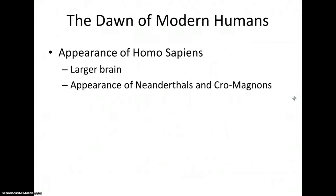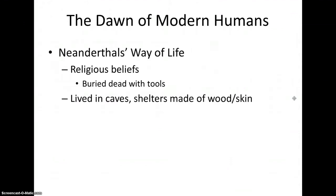Homo sapiens is the name for modern humans. They had much larger brains than Homo erectus. Neanderthals and Cro-Magnans began to appear after this time period; however, these are not ancestors of Homo sapiens. Neanderthals had powerful muscles and thick bones. They lived 200,000 to 30,000 years ago in Europe and Southwest Asia. They had developed religious beliefs and performed rituals, as evidenced by burying their dead with valuables and other tools.